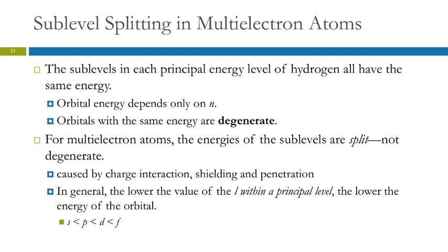In hydrogen, the sublevels within a given principal energy level all have the same energy — we call those degenerate, meaning orbitals with the same energy. In multi-electron atoms, however, the energy of the sublevels gets split; they're not degenerate anymore. This is due to charge interactions, shielding of the nucleus, and penetration. In general, the lower the value of l, the lower the energy — so within a given principal energy level, s is lowest, then p, then d, and f has the highest energy.